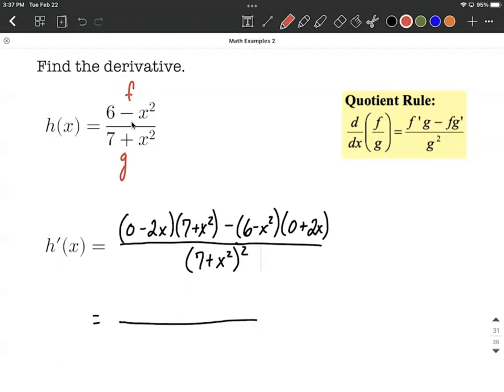But let me write this out before I clean it up and give a final answer. This was our f prime, g, f, g prime, and then our g that got squared down here in the denominator.